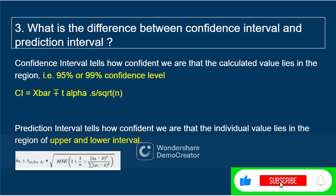Moving to the next question: what is the difference between confidence interval and prediction interval? The prediction interval tells how confident we are that an individual predicted value lies within the upper and lower limit region. The formula is: ŷ_h ± t(α/2, n−2) × √(MSE × (1 + 1/n + (x_h − x̄)² / Σ(x_i − x̄)²)). The confidence interval tells how confident we are that the calculated value lies in the region — at 95% or 99% confidence. Its formula is: x̄ ± t_α × (s / √n), which is the standard error.